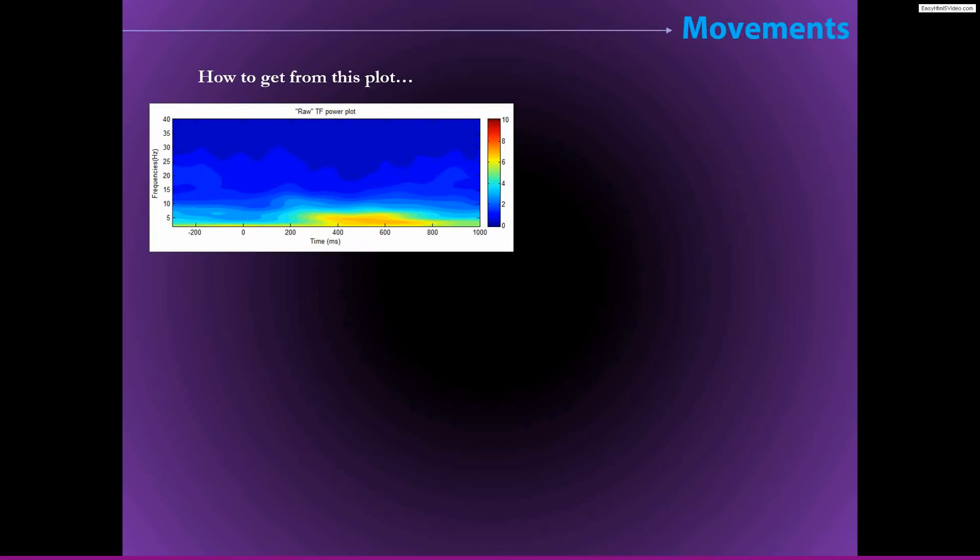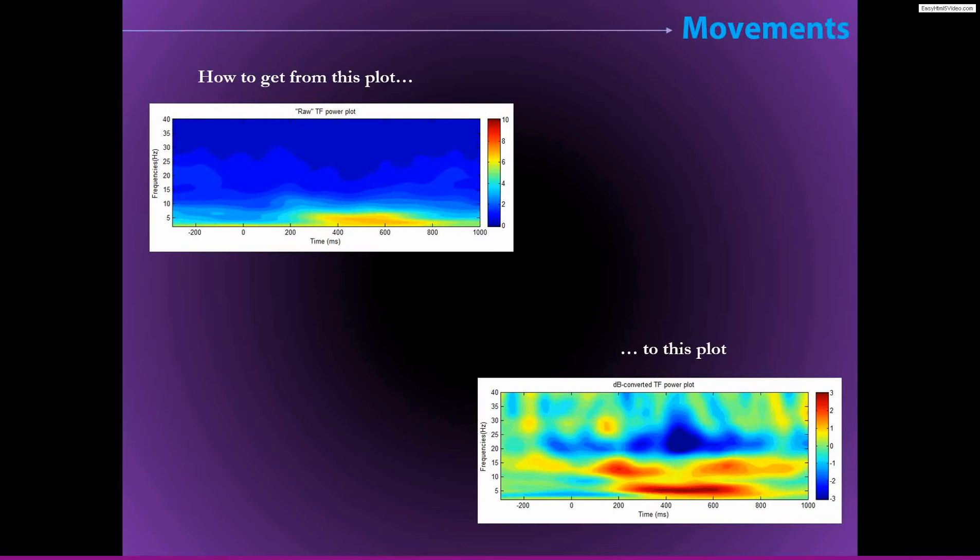And so the question is how do we get from a plot that looks like this to something that looks a bit more like this. Believe it or not, these actually come from exactly the same data, exactly the same analyses, the same wavelets and everything. The only difference is that this plot is baseline normalized and this plot is not.